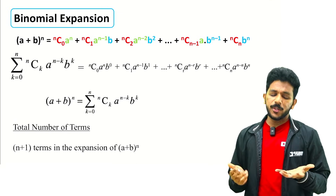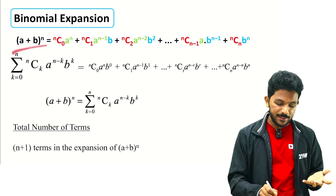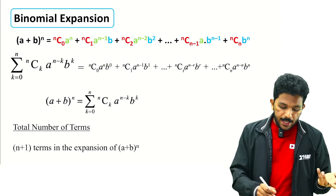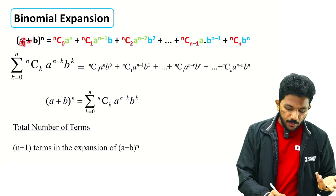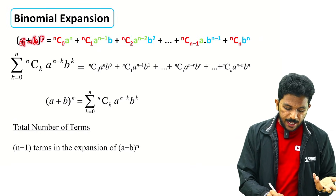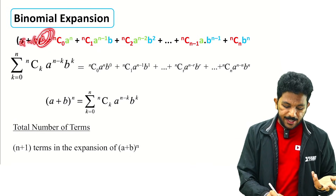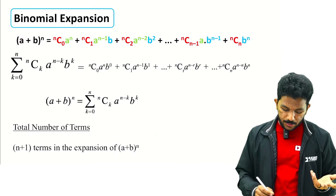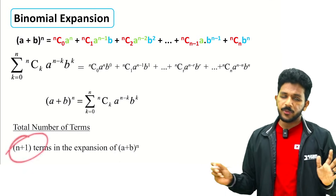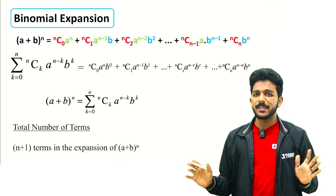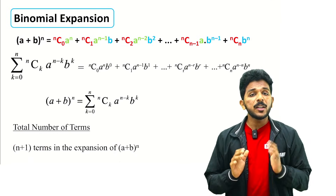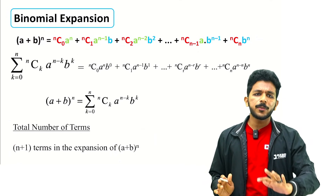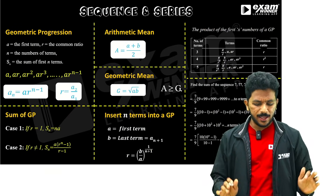Binomial expansion — there is a formula in binomial. A plus b raised to n has n plus 1 terms. Different questions are practised in the chapter and you can explain it.